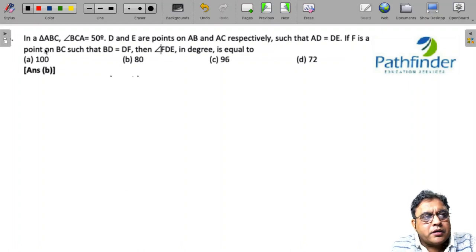CAT 2021, slot 3, quantitative aptitude, question number 5.